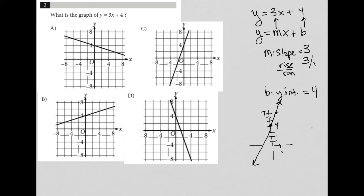So looking at choice A, that line is going in the wrong direction. So that's gone.